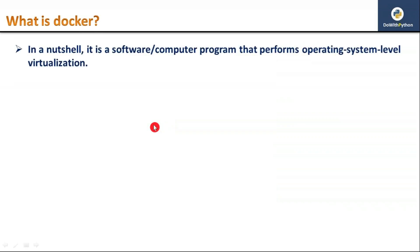In a nutshell, Docker is nothing but a computer program or a software program that performs operating system level virtualization. That means whenever you are running two applications using Docker, both applications are isolated — they feel that they are running on different operating systems. That is provided by Docker. Let me take a simple example.